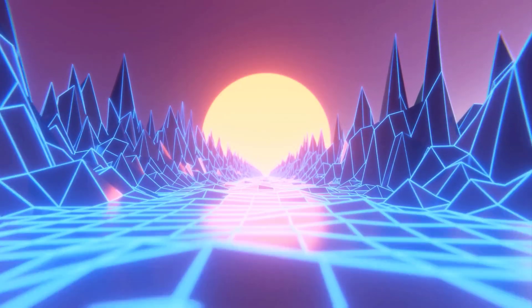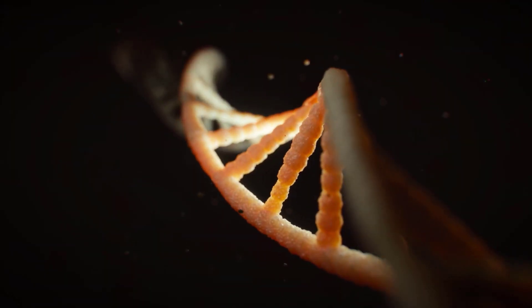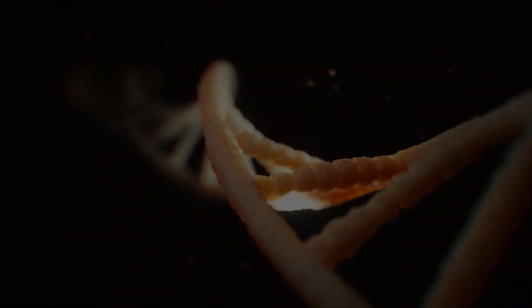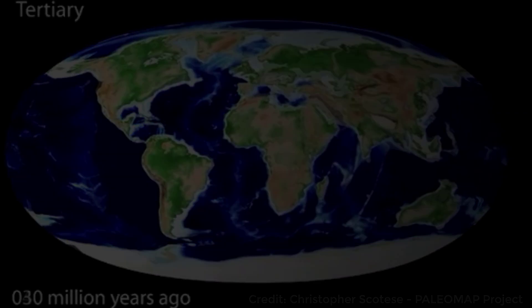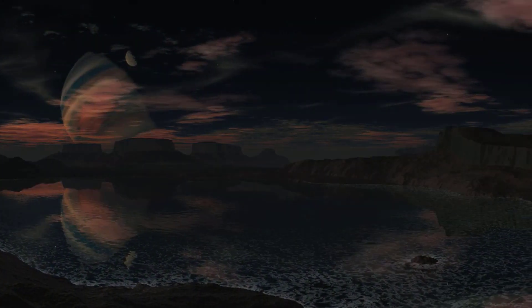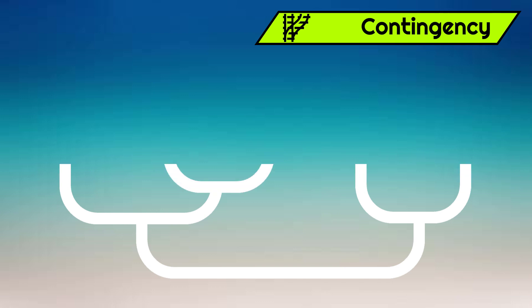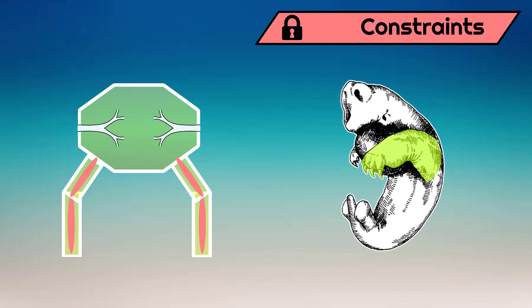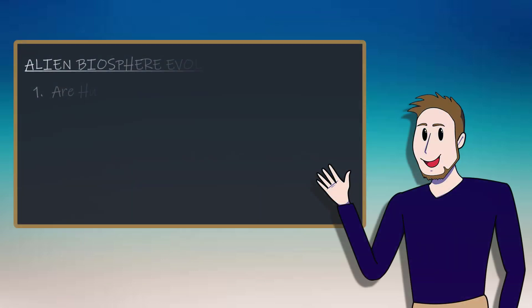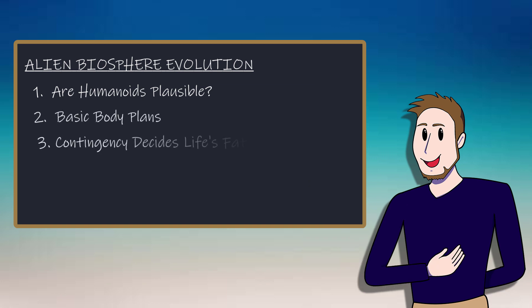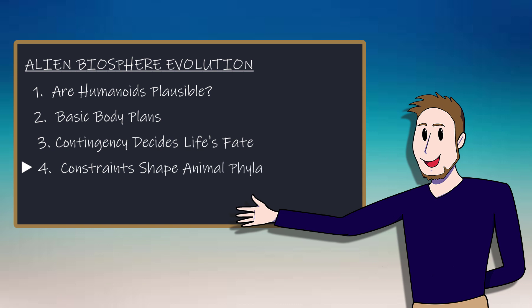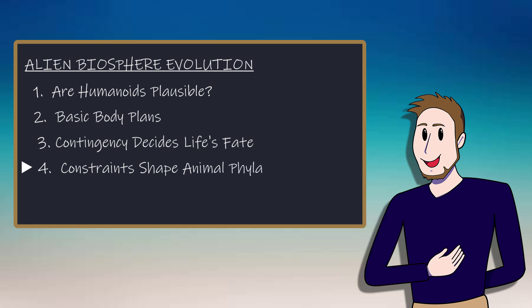Evolution has no long-term direction and no end goal. It is governed by chance events, both genetic mutations within the organisms themselves and the ever-wandering environment they try to survive in. And the same will hold true on other planets as well. With every contingency follows the establishment of novel developmental constraints, as creatures become dependent on the very adaptations that were key to their success. But what does this mean in practice — how do developmental constraints work and how can we apply this principle when thinking about life evolving on other Earth-like planets?